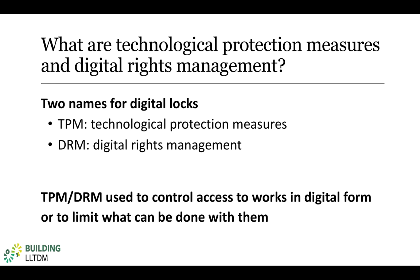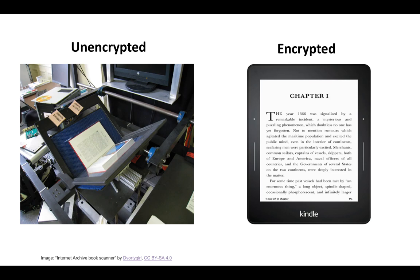Digital locks are a potential problem for text mining initiatives because often the cleanest and simplest way to build a corpus is to get access to authorized copies of the original works in digital form. In the world of books, for example, cracking the encryption on an e-book sold by Amazon would give the researcher access to a much cleaner copy than could be achieved through OCR, optical character recognition. This mode of acquisition is also preferable in some cases because it overcomes coverage limitations in existing repositories.